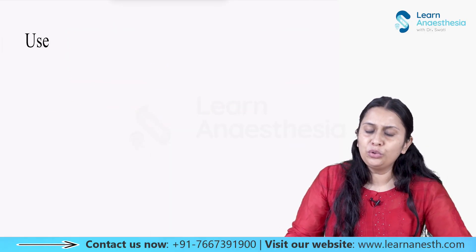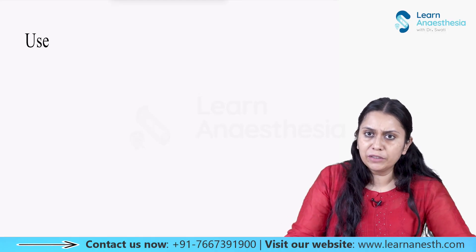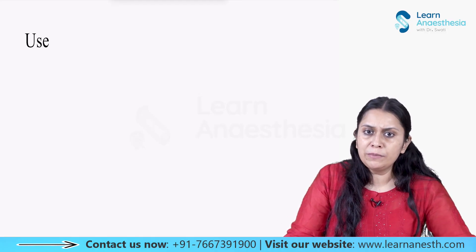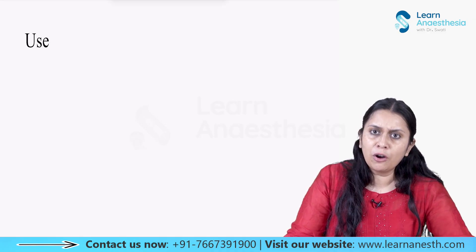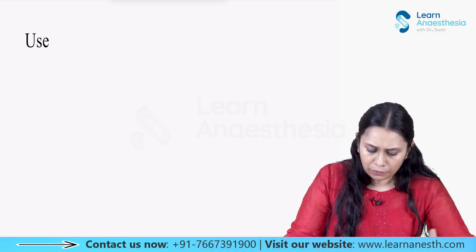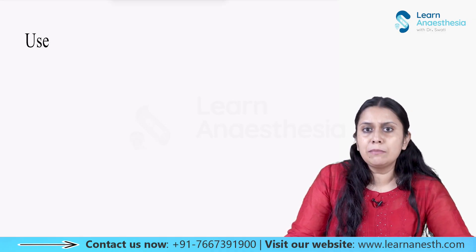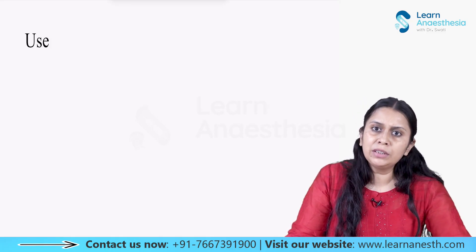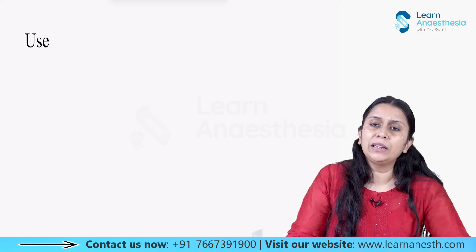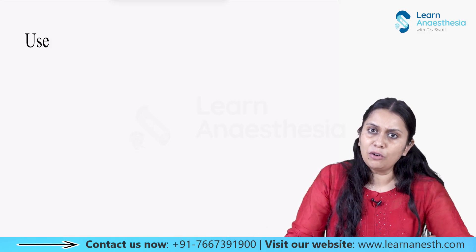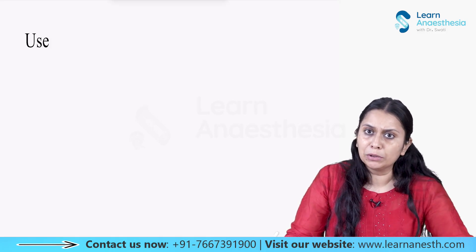What is the use of a tourniquet? We use it for limb surgery — upper or lower extremity surgery. We also use it for intravenous regional anaesthesia, for management of complex regional pain syndromes, and for management of localized malignancy via isolated limb perfusion.